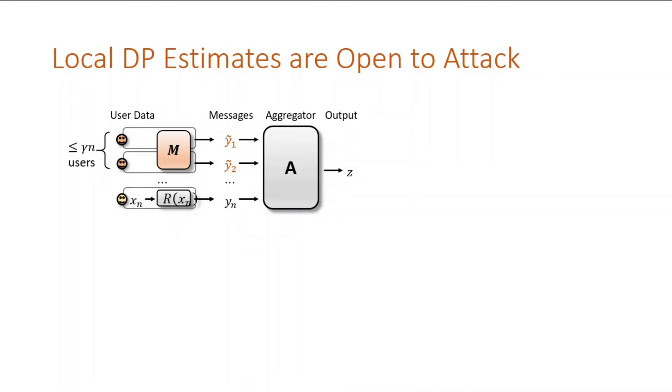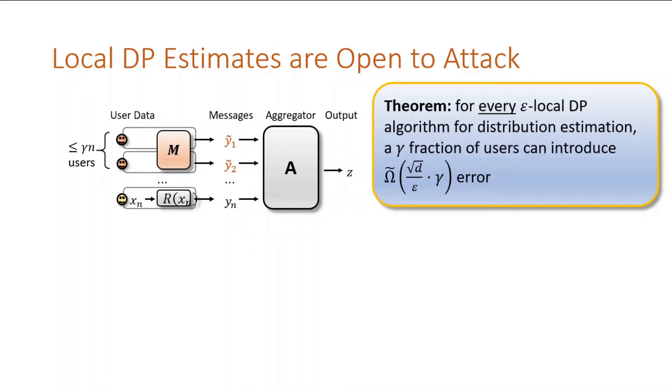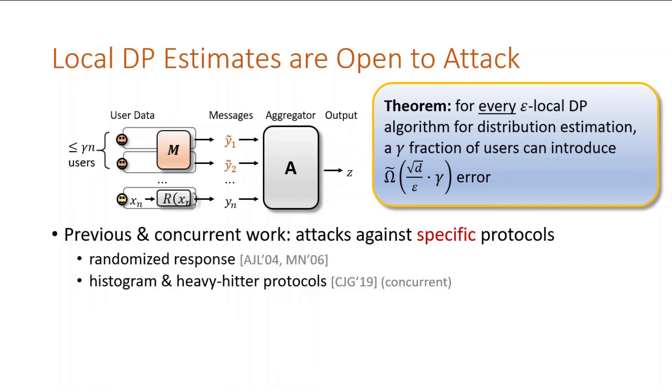As I said before, there are gamma corrupt users, and then we show that their influence on any estimation protocol scales with root d over epsilon. Prior work focused on specific protocols: randomized response, work by Avendaňo, Jacobson, and Lipmaa, and Moran and Naor, then histograms and heavy hitters by Cao, Jia, and Gong. Our work gives attacks against any protocol for this problem.